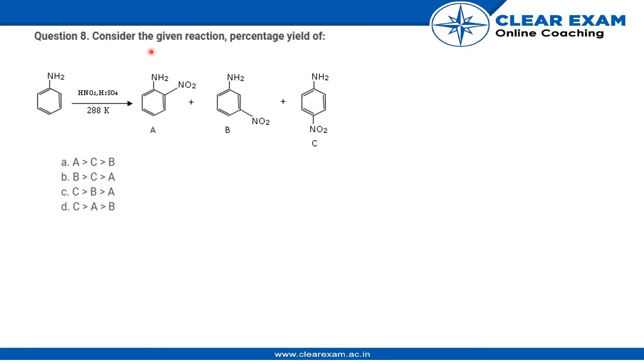Question says consider the given reaction, percentage yield of this. When we add HNO3, H2SO4 to this NH2, we get three products: that is primary NO2, secondary NO2, and tertiary NO2. So which of them will be stable?